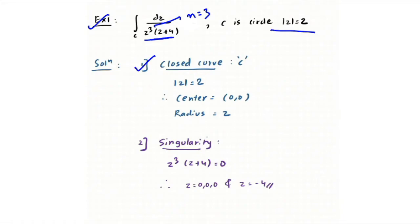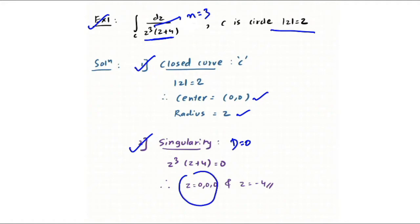First, get a clear idea about the closed curve — only then can you comment on whether singularities are inside or outside. The closed curve |z| = 2 is a circle with center (0, 0) and radius 2. To find the singularities, set the denominator equal to zero: z³(z + 4) = 0, giving z = 0 (a triple pole) and z = −4.